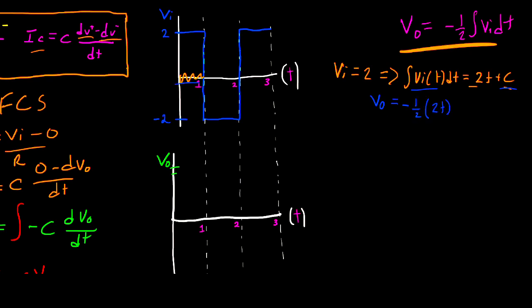So for this first interval between 0 and 1, the V out is going to be described by this line. So plotting this, VO is going to go from 0 to negative 1.